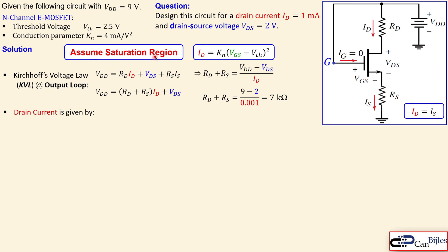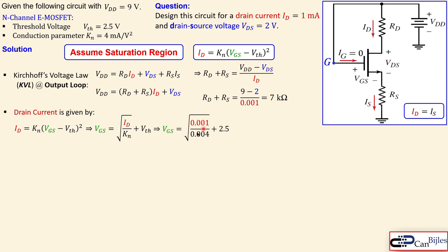Using the drain current expression for the saturation region, we can solve for VGS. Rearranging: VGS equals the square root of (ID divided by kn) plus the threshold voltage. Substituting one milliamp divided by four milliamps per square volt, plus 2.5 volts, gives exactly three volts for VGS.